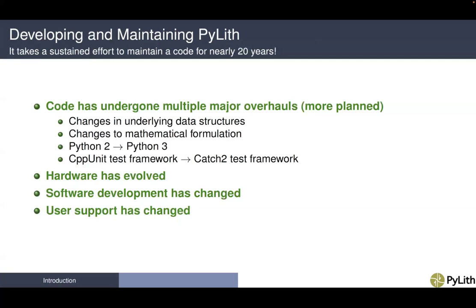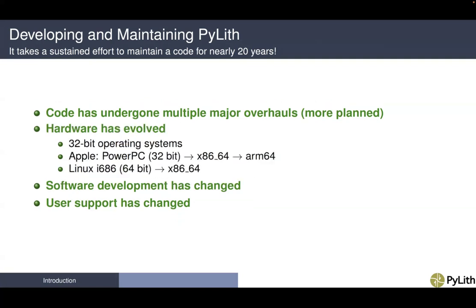We have been developing and maintaining PyLith for nearly 20 years. The code has undergone major overhauls and more are planned. We have made changes to the underlying data structures, changes to the mathematical formulation, we have migrated from Python 2 to Python 3, and we've changed C++ test frameworks. The hardware has also evolved over these times. When we started, most computers were running 32-bit operating systems. Macintosh computers were using PowerPC chips, which then migrated to Intel chips and now we have ARM processors. Similarly, Linux has migrated from 32-bit i686 to 64-bit x86-64 architecture.